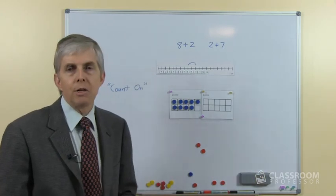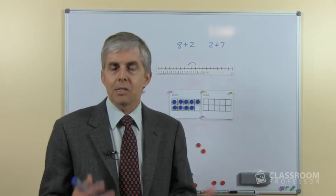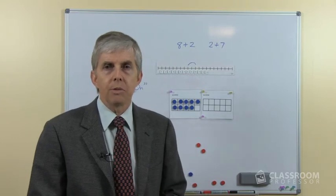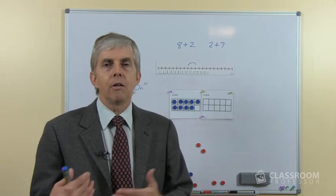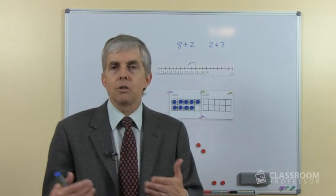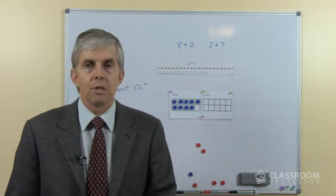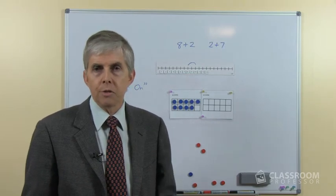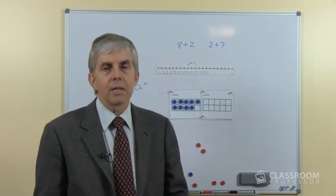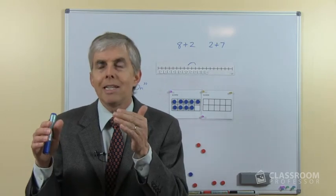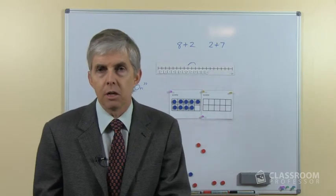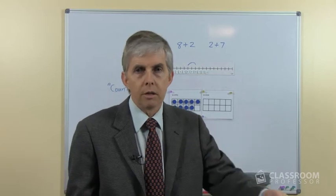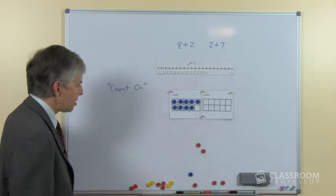Researchers have done research with young children, adding together 2 collections of objects, and at a younger age or earlier in children's development of thinking, some children will count both collections, which obviously is slow and inefficient, but they reach a point where they realize if I already know the number in the first collection, I only need to count on, hence this strategy.